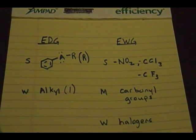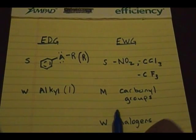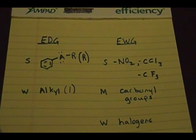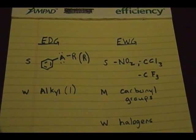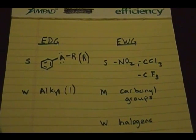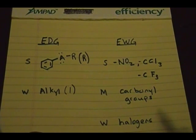Moderate electron withdrawing groups are carbonyl groups — ketones, esters, aldehydes, that type of carbonyl group. However, there's a trick to it.